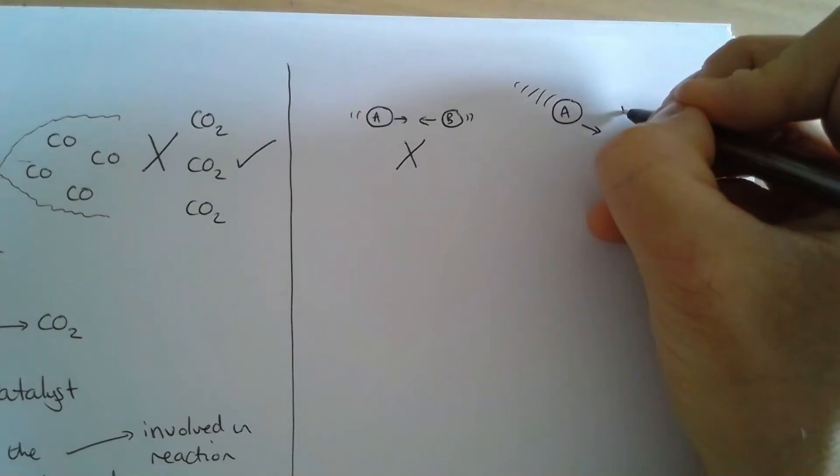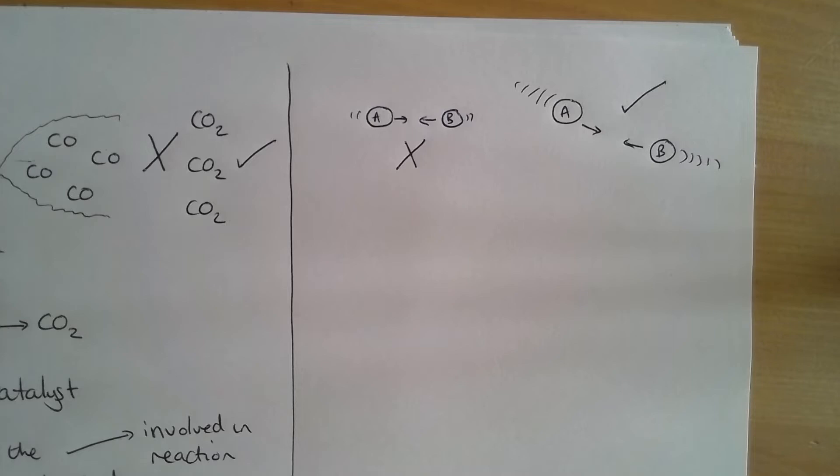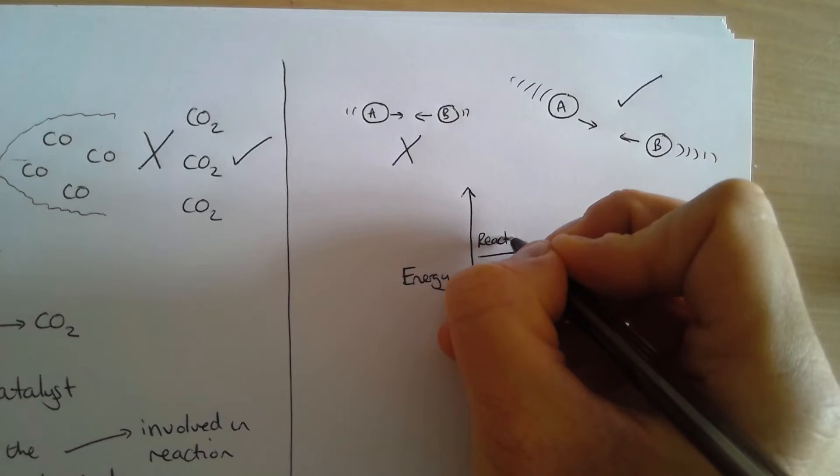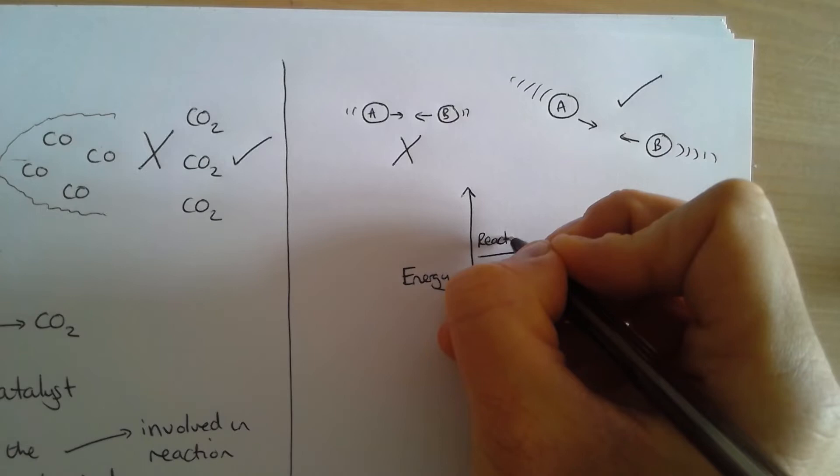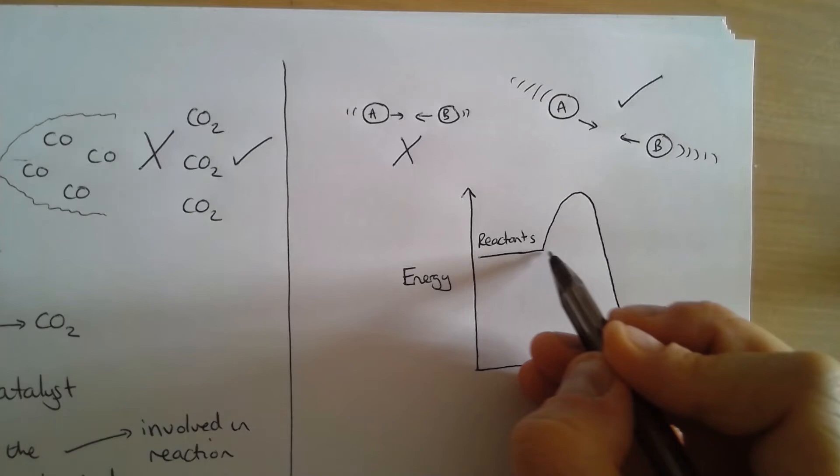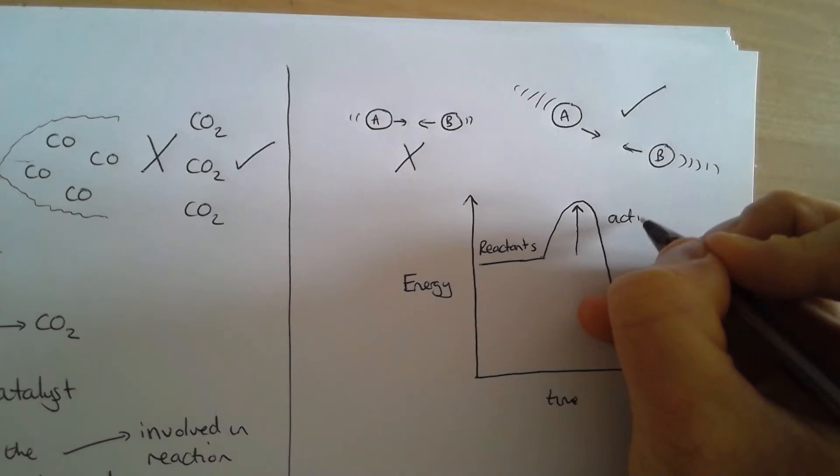We say the minimum energy that they need to react is called the activation energy, and we've seen that on a graph before. It's this hump on the graph. The energy that's needed in order for this to react is shown by how high the hump is away from the reactant line, and we call that the activation energy. Particles have to have enough energy, greater than the activation energy, in order for a reaction to take place.